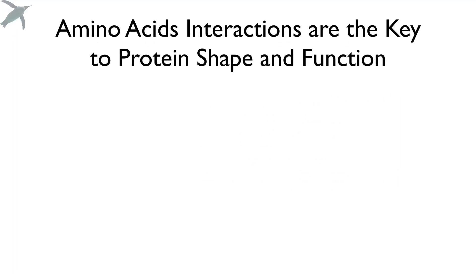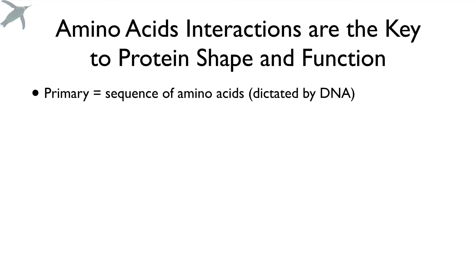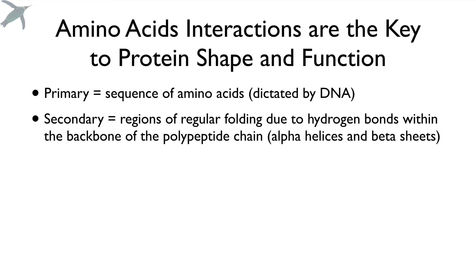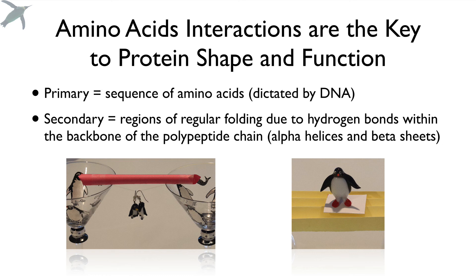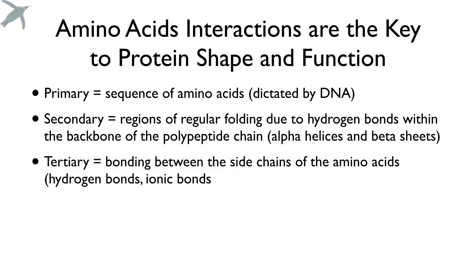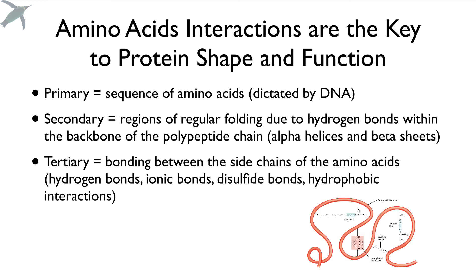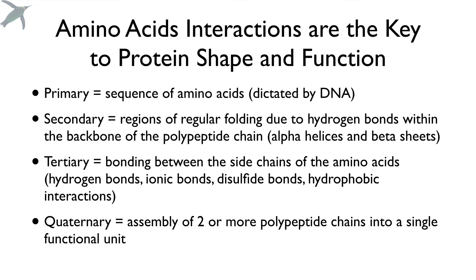So hopefully you've seen that the interactions of amino acids are the key. Primary level of structure is the sequence dictated by the DNA. Secondary: regions of regular folding between atoms in the backbone — not the side chains — forming alpha helices and beta sheets, the structural framework of all proteins. Tertiary: four different types of bonds between side groups, with side chains interacting to form a complex three-dimensional shape. Quaternary: two or more polypeptide chains assembled into a single functional unit.